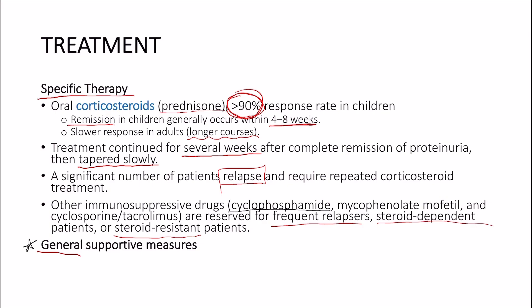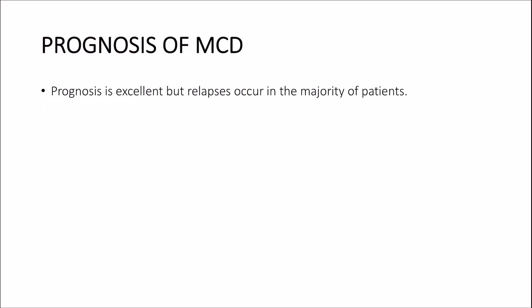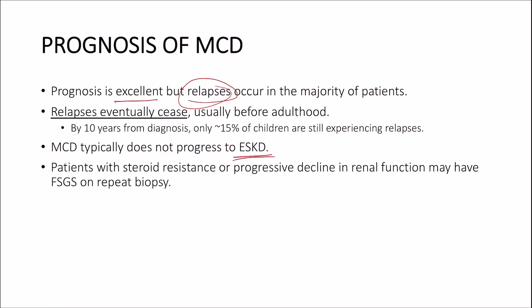The supportive measures are discussed in our previous video on nephrotic syndrome. The prognosis of minimal change disease is generally excellent, although most patients experience relapses. The relapses eventually cease and many children eventually outgrow their disease before adulthood. Minimal change disease typically does not progress to end-stage kidney disease. Patients with steroid resistance or progressive decline in renal function may actually have focal segmental glomerulosclerosis on repeat biopsy.